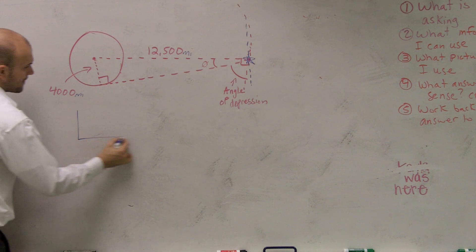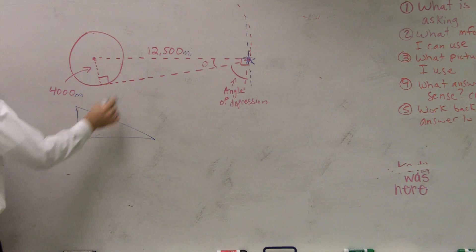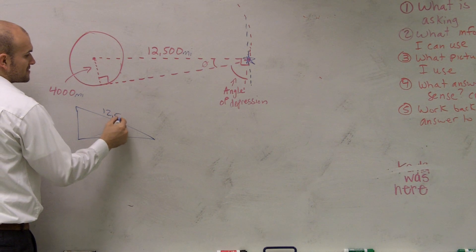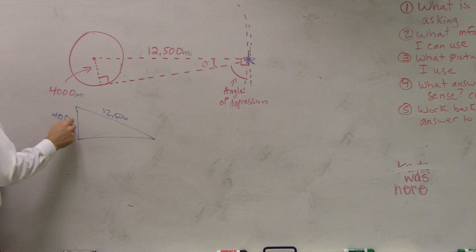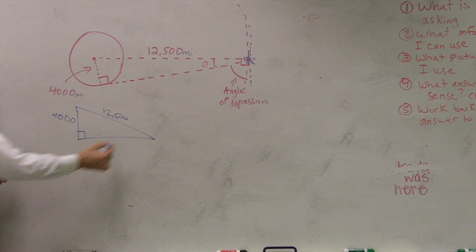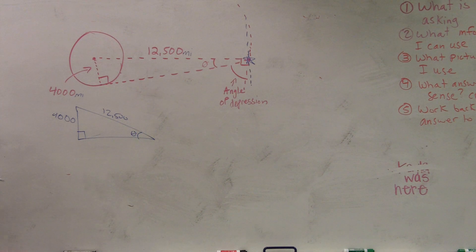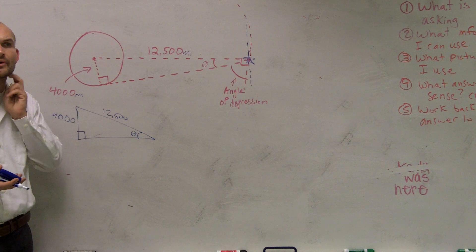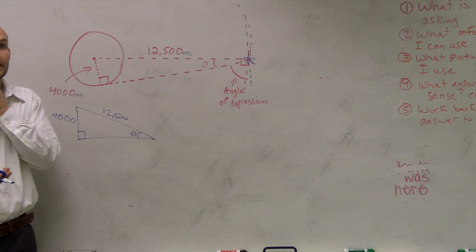So we have an angle. Our hypotenuse is 12,500, and our radius is 4,000. Our opposite of our angle theta is 4,000. So if I want to find this angle, which trigonometric property am I going to have to use?